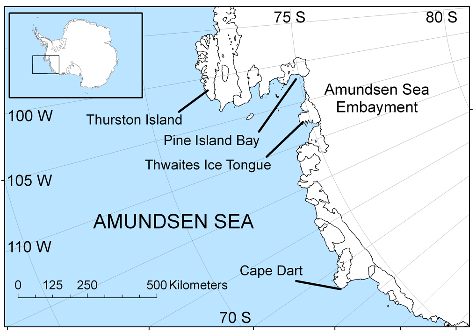Pine Island Bay is a bay about 40 miles long and 30 miles wide, into which flows the ice of the Pine Island Glacier at the southeast extremity of the Amundsen Sea. It was delineated from aerial photographs taken by USN Operation Highjump in December 1946, and named by the Advisory Committee on Antarctic Names for the USS Pine Island, seaplane tender and flagship of the Eastern Task Group of USN Operation Highjump which explored this area.